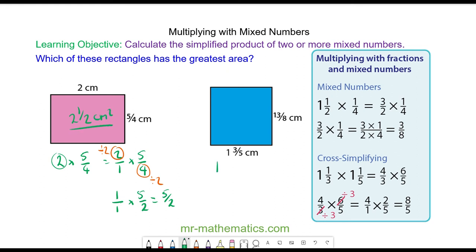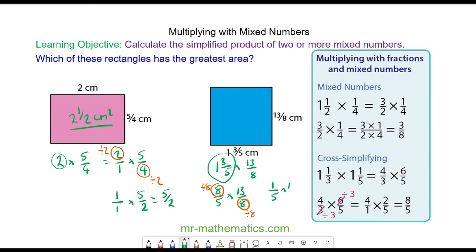For the blue rectangle, we have 1 and 3 fifths multiplied by 13 over 8. We can write this as a top-heavy fraction: 8 fifths multiplied by 13 over 8. We can cross-simplify here and here, dividing both by 8. So we have 1 over 5 multiplied by 13 over 1, which is 13 fifths. As a mixed number, this is 2 and 3 fifths, which as a decimal is 2.6 centimetres squared. So the blue rectangle has the greater area by 0.1 centimetres squared.